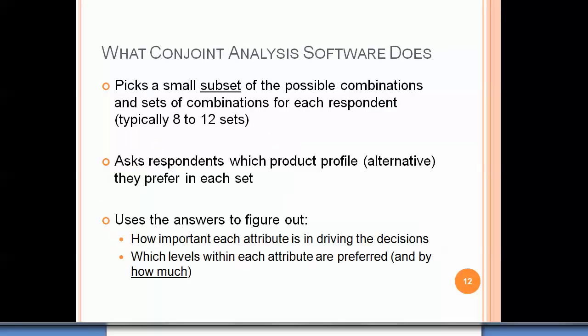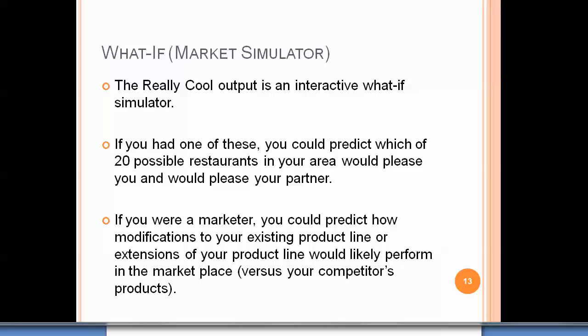What conjoint analysis software does is carefully pick a small subset of possible combinations to display to respondents. It typically chooses about 8 to 12 sets for each respondent to evaluate, which they can complete in about 2 to 10 minutes. We ask which product profile or alternative they prefer in each set, and use those repeated answers to figure out how important each attribute is in driving decisions and which levels within each attribute are preferred and by how much. The result is a market simulator — an interactive tool to help you understand how people make decisions.